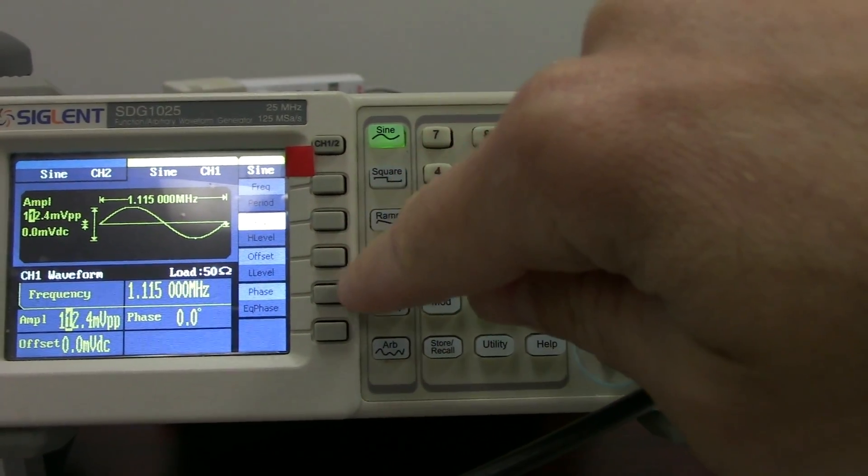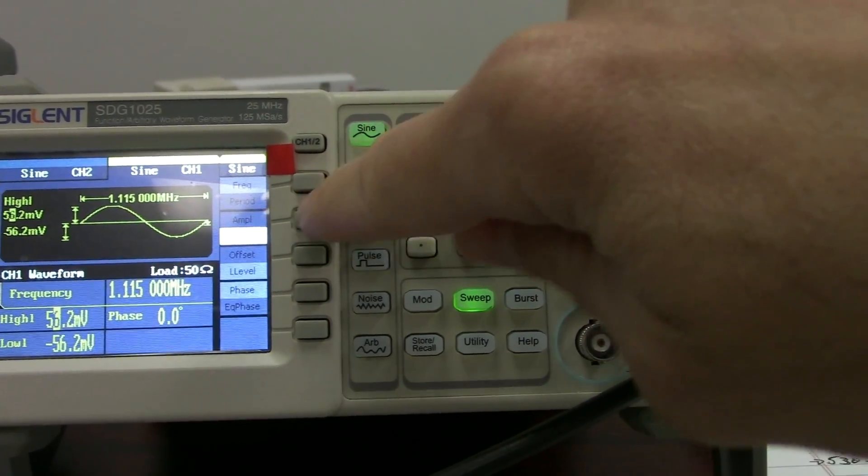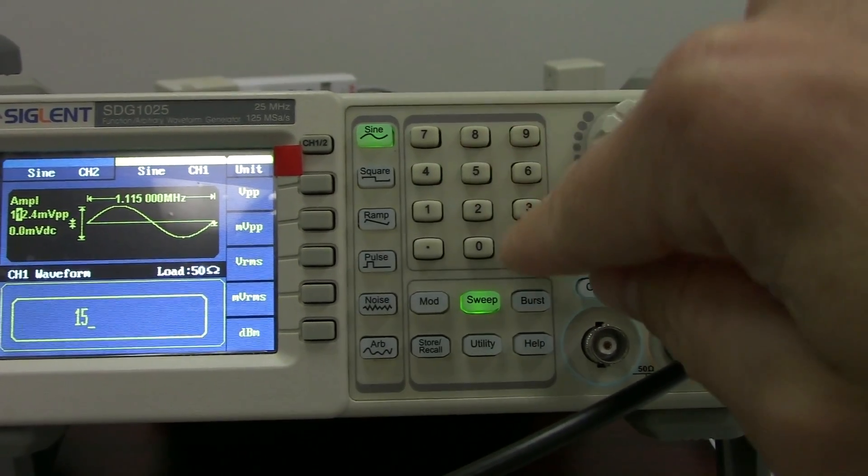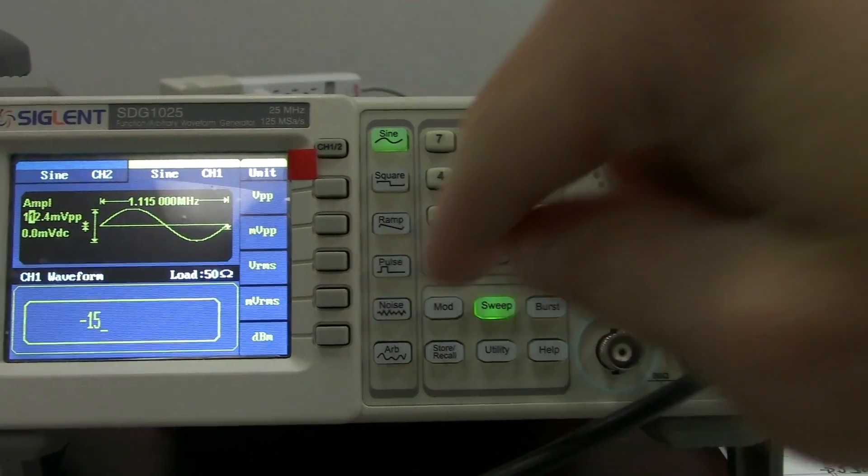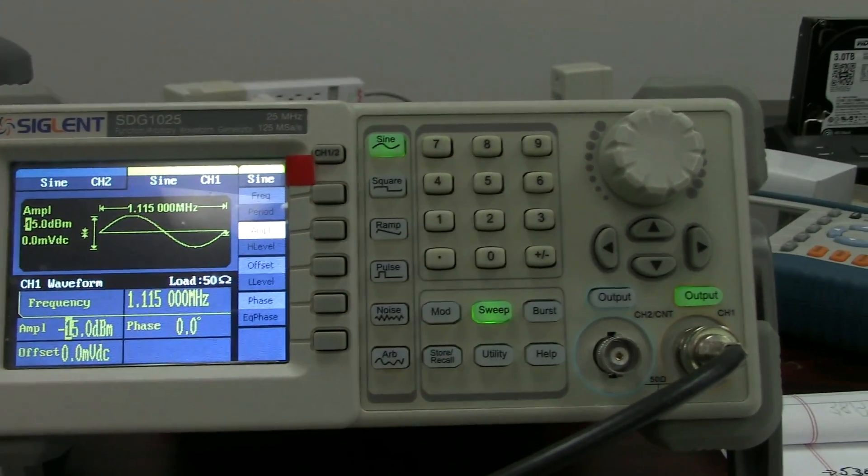And we're going to configure that amplitude to minus 15 dBm. Get a little fat finger action here. And there we go. Finally get the dBm set up.